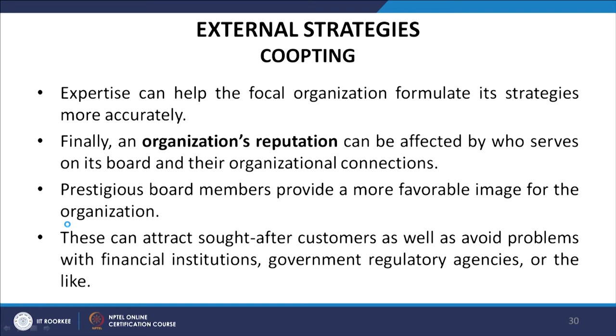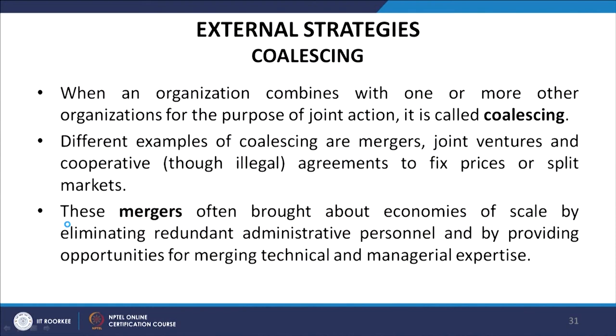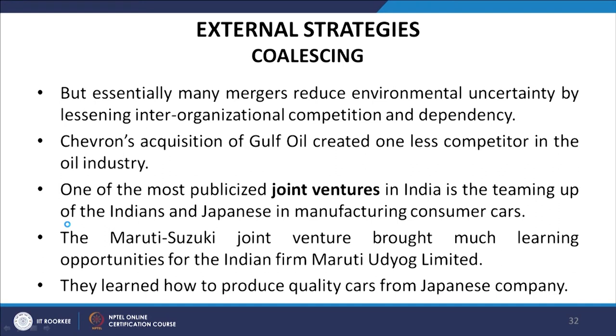Now let us look at coalescing. When an organization combines with one or more other organizations for the purpose of joint action, it is called coalescing. Different examples include mergers, joint ventures and cooperatives, and agreements to fix prices or split markets. Mergers often bring about economies of scale by eliminating redundant administrative personnel and providing opportunities for merging technical and managerial expertise. Essentially, many mergers reduce environmental uncertainty by lessening inter-organization competition and dependency — for example, Chevron's acquisition of Gulf Oil created one less competitor in the oil industry.